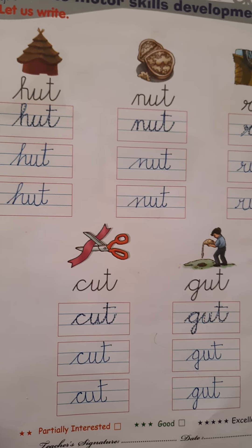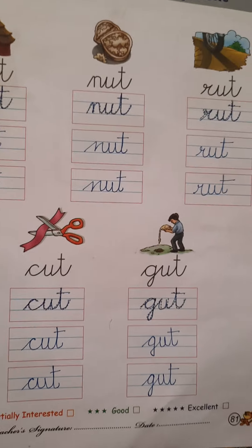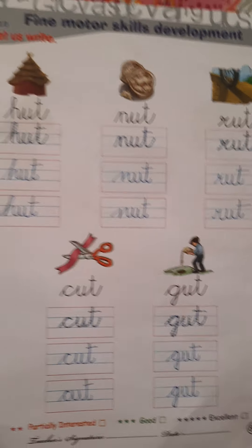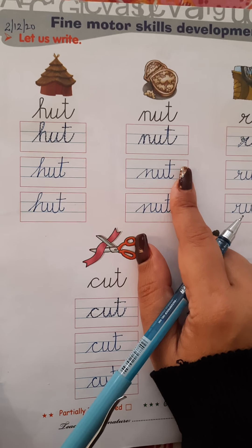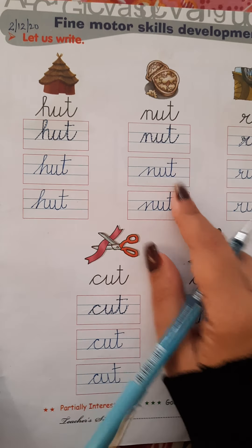You have to do this page — page number 81, U-T words, in book.